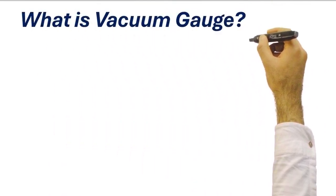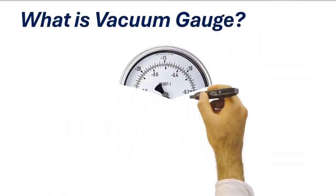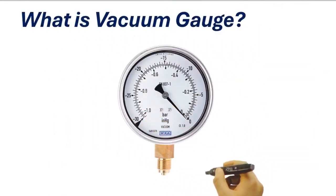What is a vacuum gauge? A vacuum gauge is a device that measures pressure in a vacuum, which is usually below atmospheric pressure.